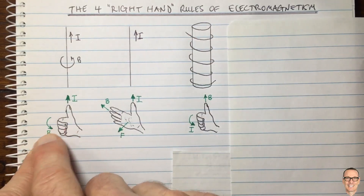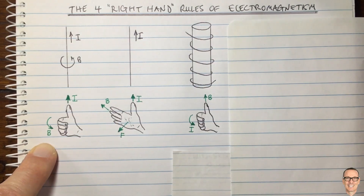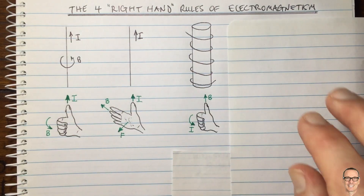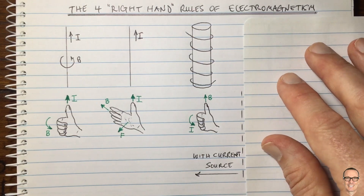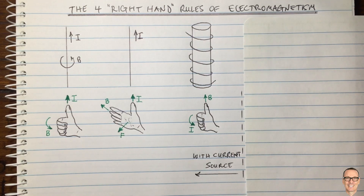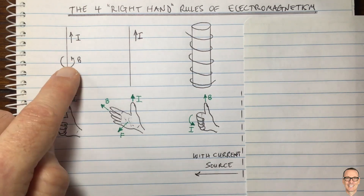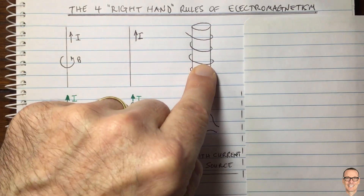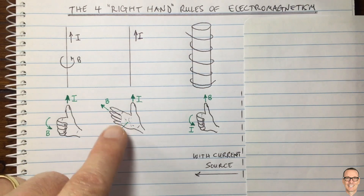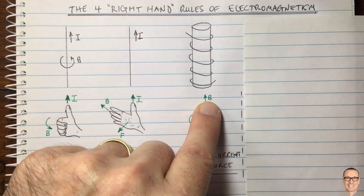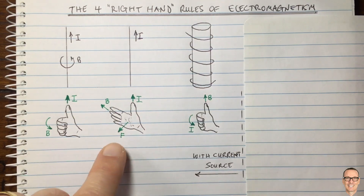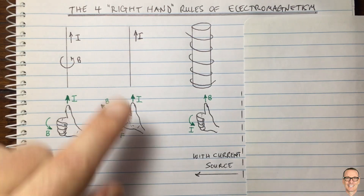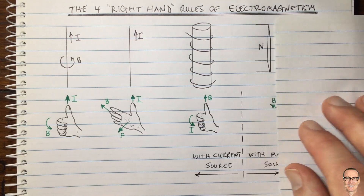What is common to all three of these rules? The common element is that they all have a current source. In each case there is a current source supplying current to the wire, and we are finding either the induced magnetic field or the induced force.